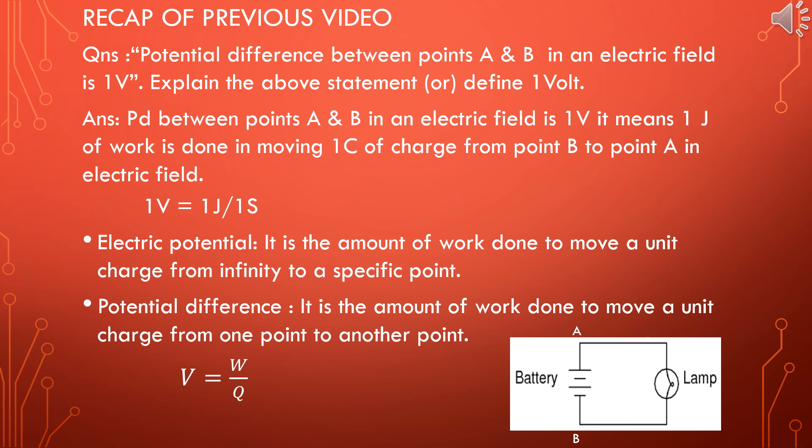But the definition says it is the amount of work done to move a unit charge from one point to another point. If you observe the circuit diagram, you are going to create the pressure difference when you connect a conductor with a lamp from point B to point A, where you are allowing the electron to do work to move from point B to point A. That can be given in the formula: V is equal to W by Q.